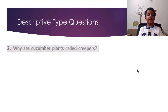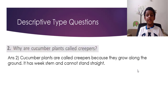Question 2: Why are cucumber plants called creepers? The answer is: cucumber plants are called creepers because they grow along the ground. They have a weak stem and cannot stand straight.